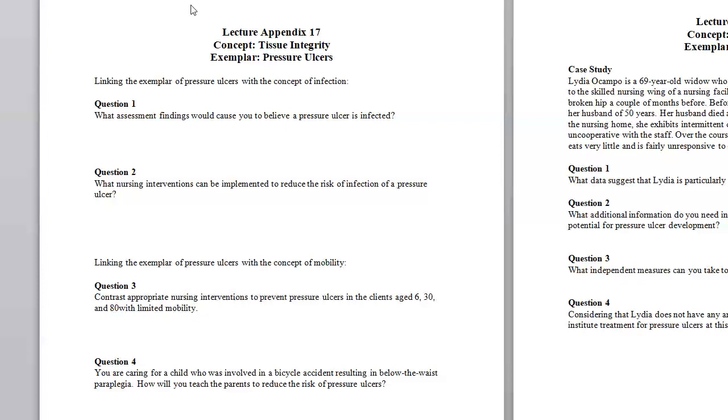All right, question two. What nursing interventions can be implemented to reduce the risk of infection of a pressure ulcer? Obviously, to reduce this risk of a possible infection, we would definitely keep the wound clean, administer treatment as ordered for wound care. Anytime you're going to change the dressing, you're going to clean the wound as well, and to keep the patient off the wound. All right, so positioning is of utmost importance to avoid getting an infection in that.